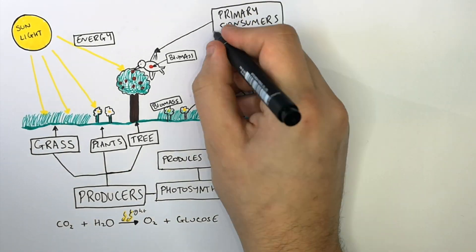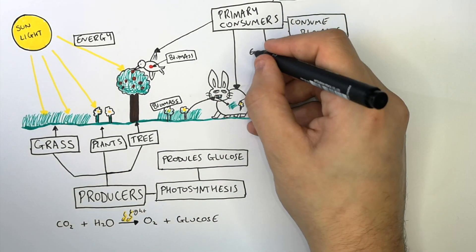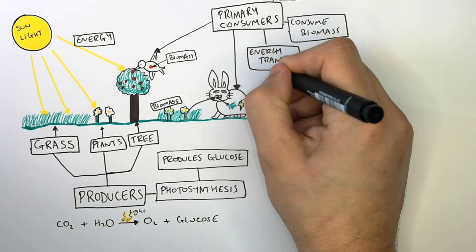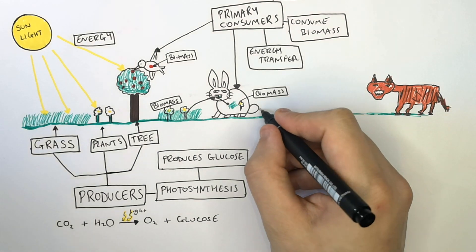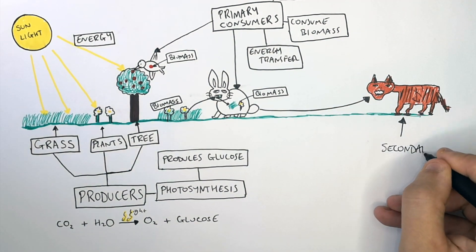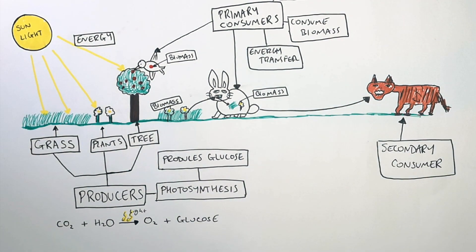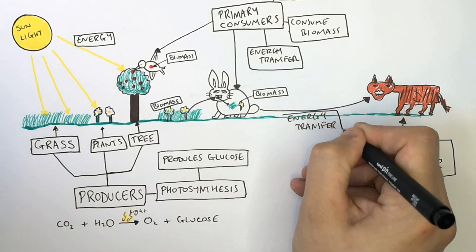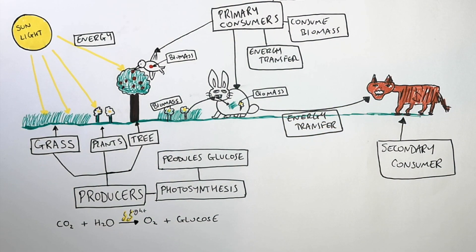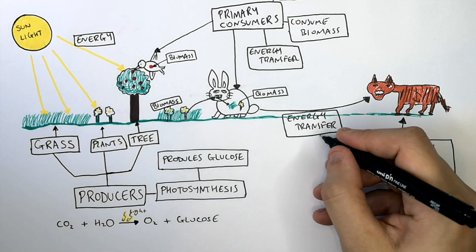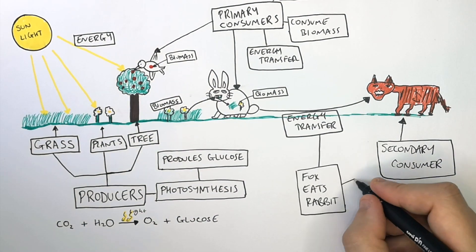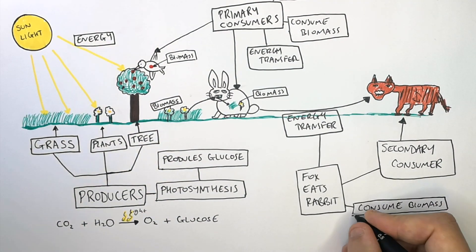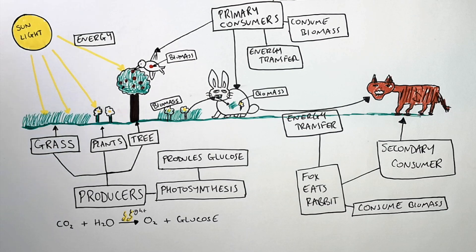Primary consumers consume biomass and there is an energy transfer into them from the producer. The next transfer of biomass occurs between the primary consumer to the secondary consumer whereby there is an energy transfer from the primary consumer into the secondary consumer when the secondary consumer eats the primary consumer. So in this case here, the fox eats the rabbit and consumes the biomass which contains energy and allows the energy to be transferred into the fox.